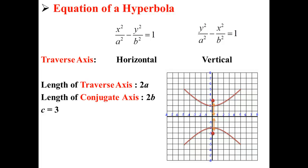There's also another variable, c. c is the length of the foci to the center. Each of our foci are three units away from the center.